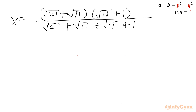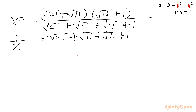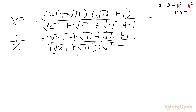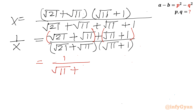Now I can take the reciprocal of both sides. So 1 over x will become: root 21 plus root 11 plus root 11 plus 1, divided by root 21 plus root 11 plus root 11. I can cancel out root 21 plus root 11, leaving 1 over root 11 plus 1, plus 1 over root 21 plus root 11.